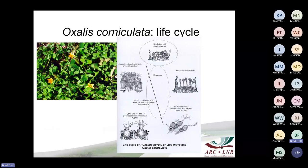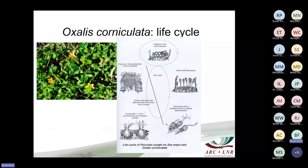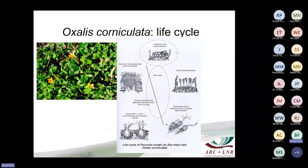The pycnial and aecial stages occur on Oxalis corniculata — a weed quite common in certain maize fields, particularly in the lowveld areas and eastern Mpumalanga and KwaZulu-Natal more so than the rest of the maize industry. This is where the sexual stage of the pathogen takes place. From there it continues back onto maize, where the asexual stage takes place. Some fungi have really complicated life cycles.